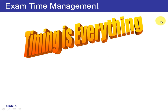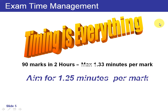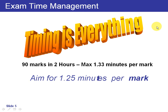Timing is everything. From an exam time management point of view, for 90 marks in two hours — the time allowed — that gives you 1.33 minutes per mark. However, I recommend aiming for 1.25 minutes per mark: roughly 1.25 minutes for a one-mark question and 2.5 minutes for a two-mark question — so between two and three minutes on average.